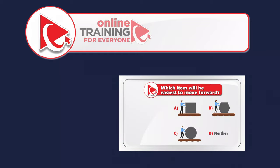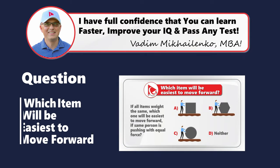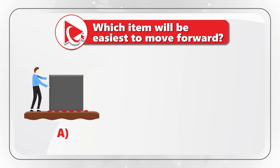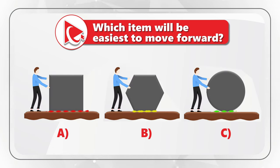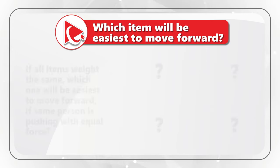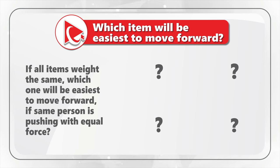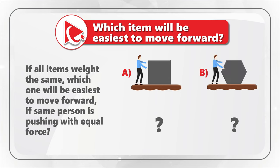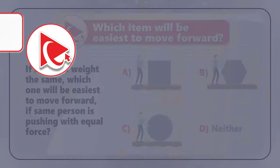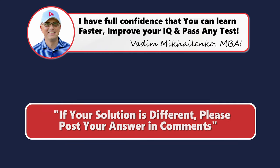Now I have a question for you to practice your skills. We have three different scenarios of a person moving an object — Choices A, B, and C. If all items weigh the same, which object would be easiest to move forward if the same person is pushing with equal force? Select one out of four possible choices: A, B, C, or D — neither one. When you solve this challenge, please post your answer in comments so I can give you feedback. Thanks for participating and good luck!